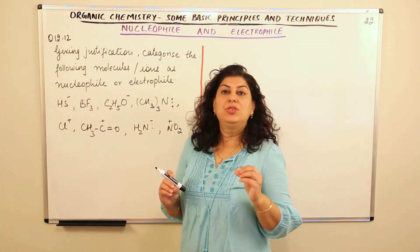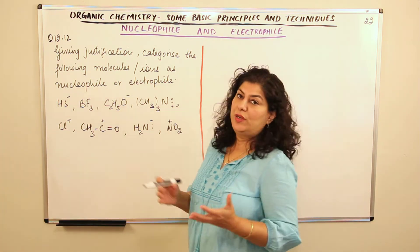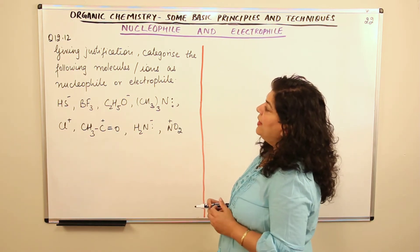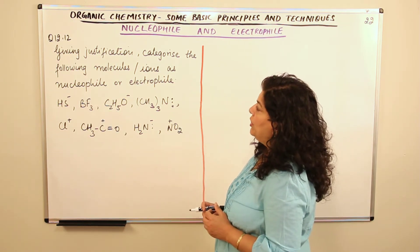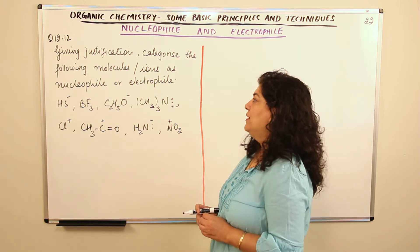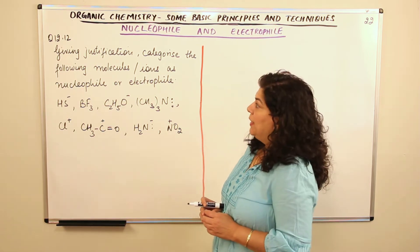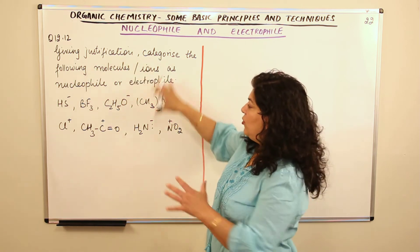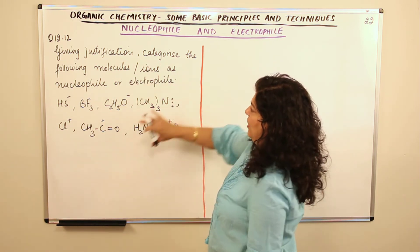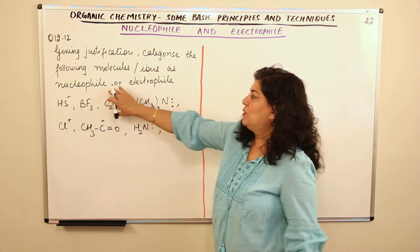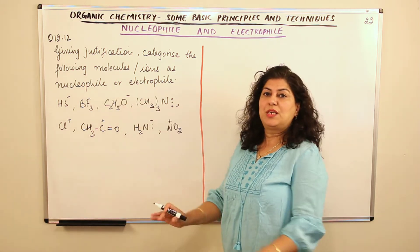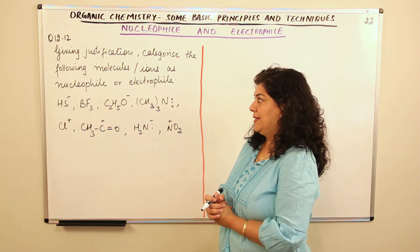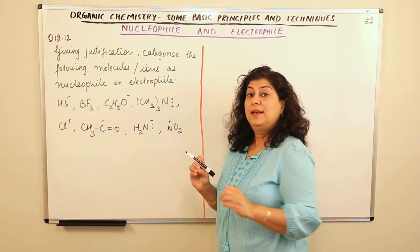Now question 12.12: giving justification, categorize the following molecules or ions as nucleophiles or electrophiles. You have to give reason and justification, and divide them into categories — which are nucleophiles and which are electrophiles. First, let's remember what nucleophiles and electrophiles are.